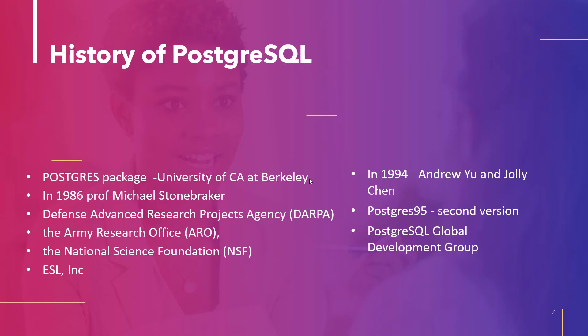The last topic of this tutorial is the history of PostgreSQL. PostgreSQL springs from the PostgreSQL package written at the University of California at Berkeley. The implementation of PostgreSQL began in 1986 by Professor Michael Stonebreaker. The project was sponsored by the Defense Advanced Research Projects Agency, the Army Research Office, the National Science Foundation, and ESL Inc. In 1994, Andrew and Jolly Chen added an SQL language interpreter to PostgreSQL. PostgreSQL was the second version and the code was reduced in size by 25%.